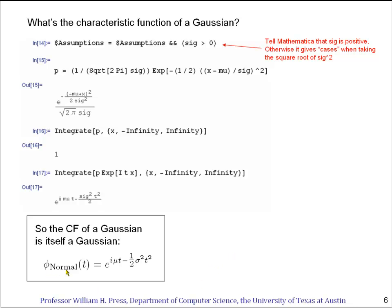Well if this had been minus a half t squared over sigma squared, that would essentially have been, except for a shift, the original normal distribution.